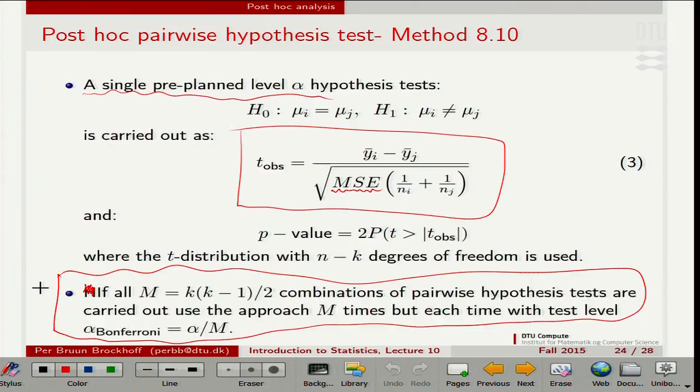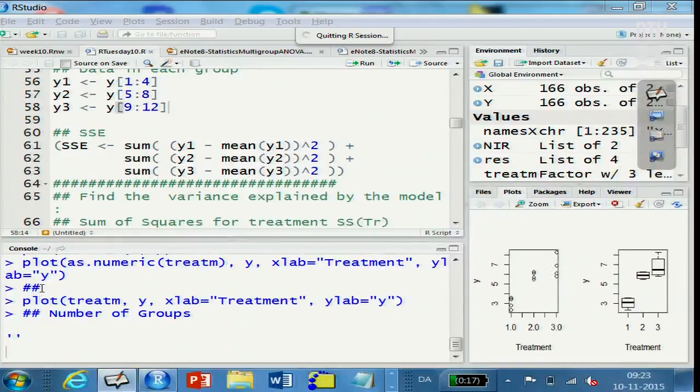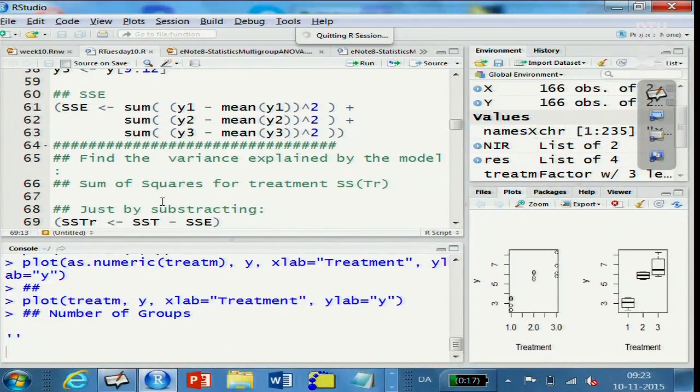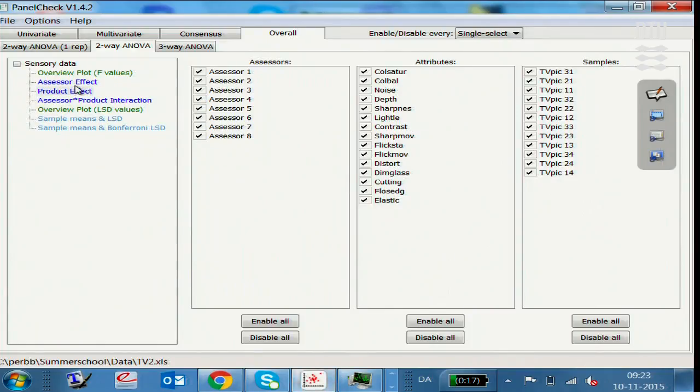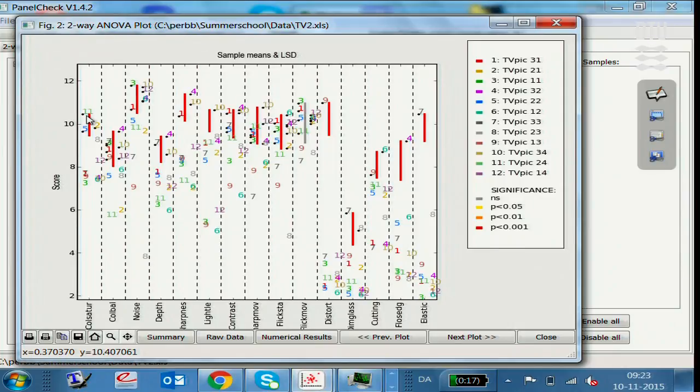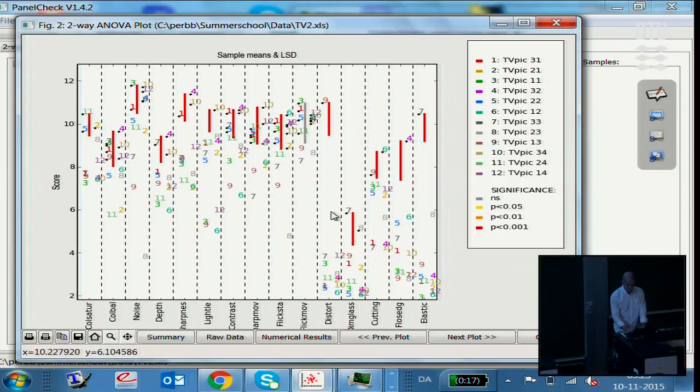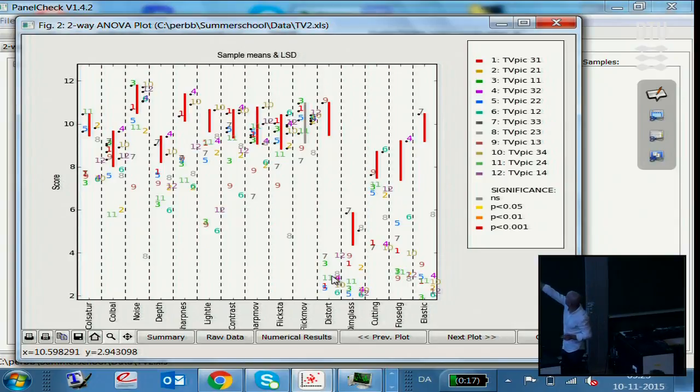Let me finalize this post-hoc thing, the first part of it at least. We are back in this PanelCheck software that we have made for the industry and that they use, where we do have actually each of those, now in this case we have not only one attribute, not only the noise, I actually measured a lot of different attributes. So we do this analysis of variance many times actually here, not only one time, but many times.